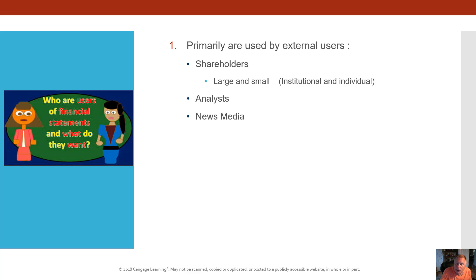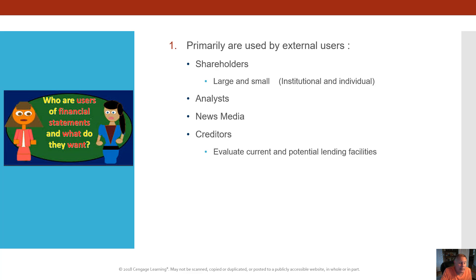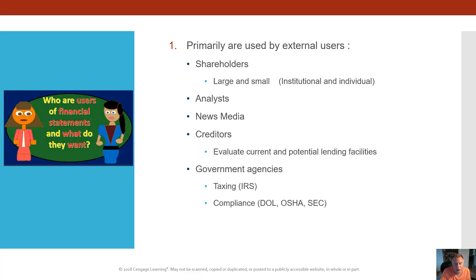Other users include the news media, keeping the public informed, and creditors — people who lend the company money through traditional lending or bond markets — who need to evaluate whether the firm is complying with credit agreement terms and whether to lend more money. Government agencies such as taxing authorities like the IRS, the Department of Labor, OSHA, and the SEC are also primary users, along with other stakeholders.